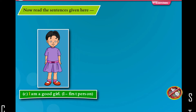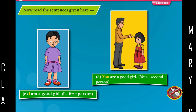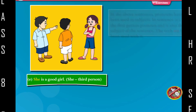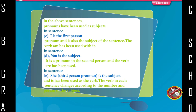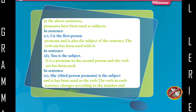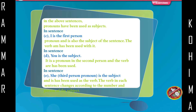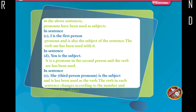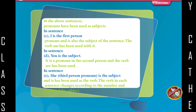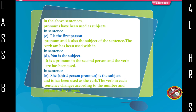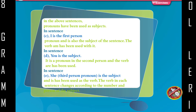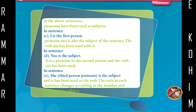Now read the sentences given here. Sentence C: I am a good girl — 'I', first person. Sentence D: You are a good girl — 'You', second person. Sentence E: She is a good girl — 'She', third person. In the above sentences, pronouns have been used as subjects. 'I' is the first person pronoun and subject; the verb 'am' has been used. 'You' is the second person subject; the verb 'are' has been used. 'She', a third person pronoun, is the subject; 'is' has been used as the verb. The verb in each sentence changes according to the number and person of the subject.